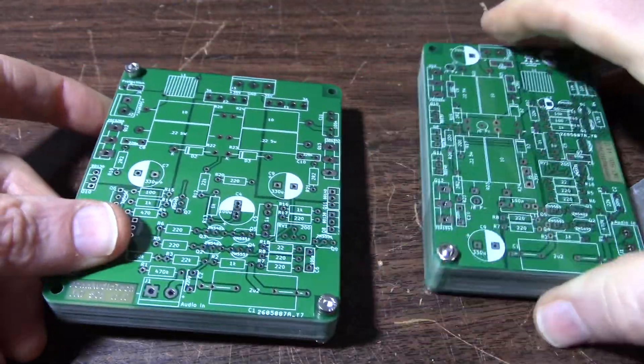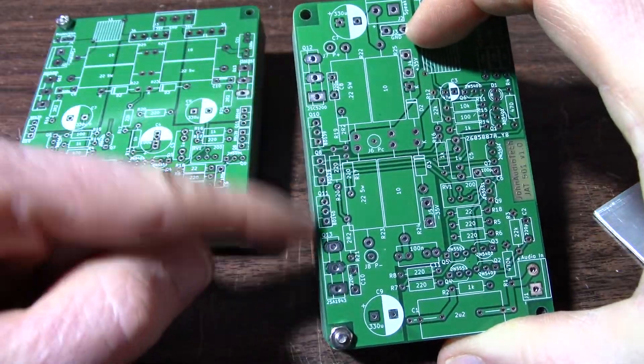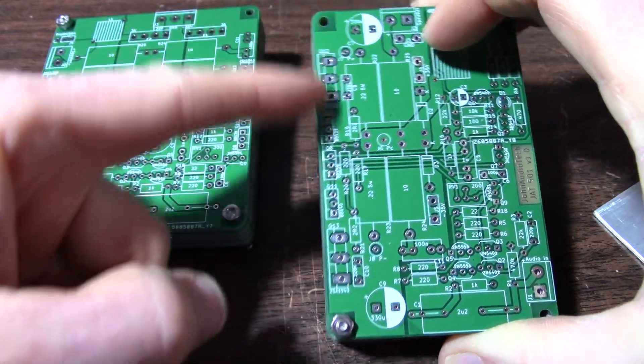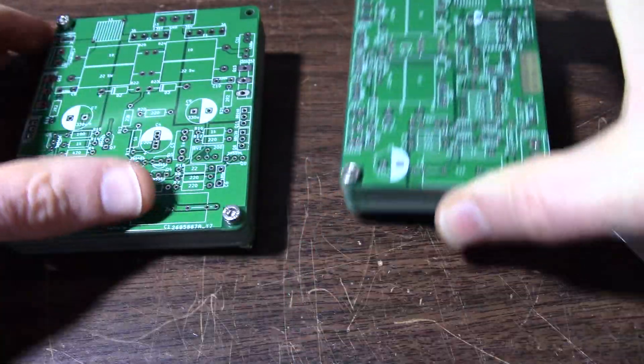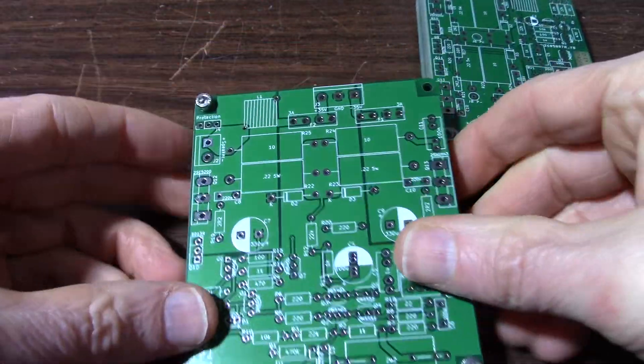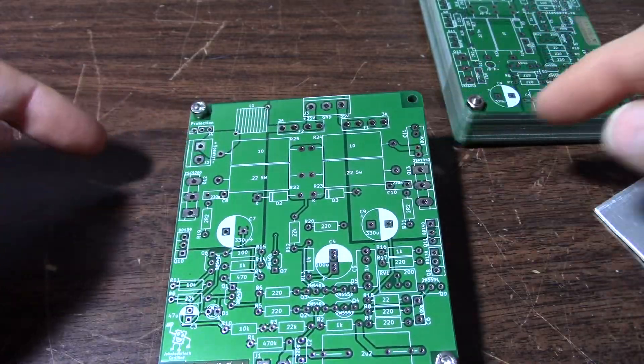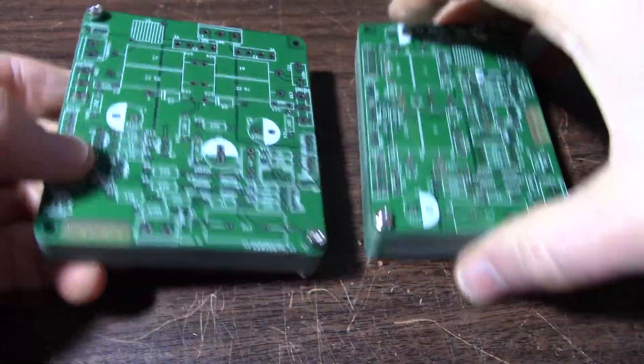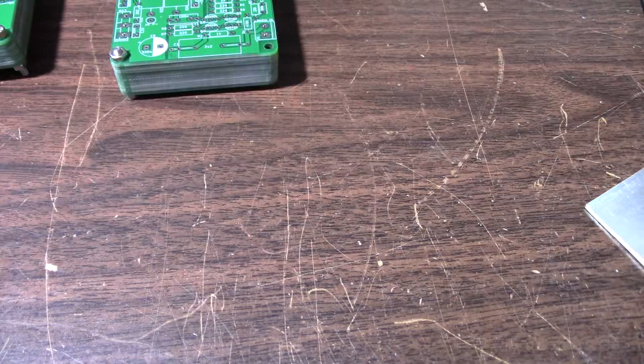Also have another version of the board where all the outputs and the other transistors that are attached to the heat sink are on one side. So it's kind of a narrow board. Of course the original design had the transistors, the outputs, coming off on either side.